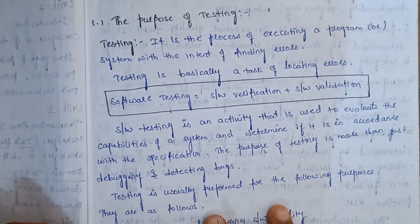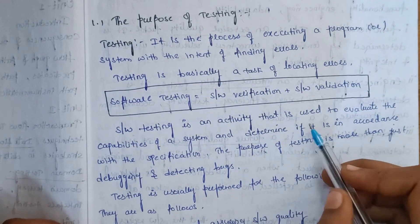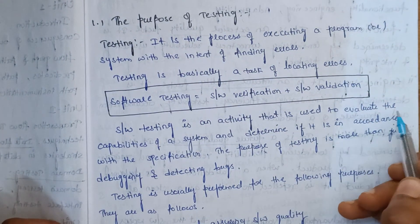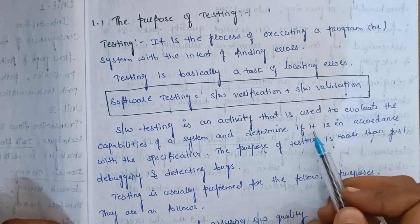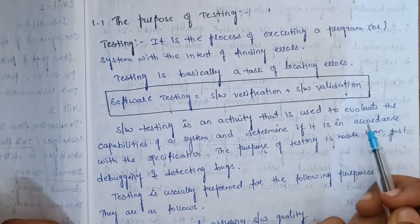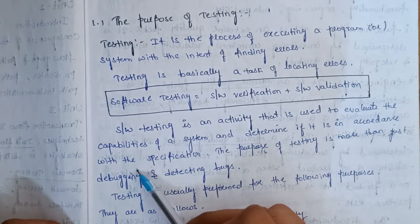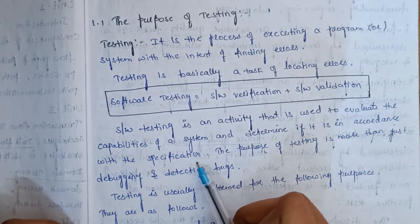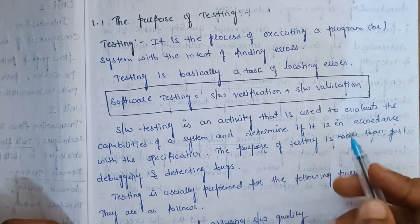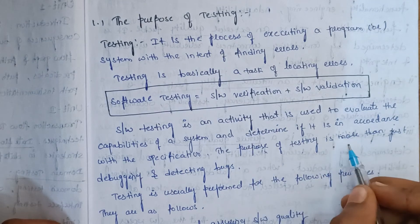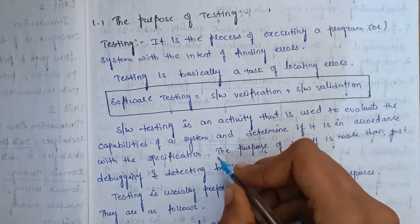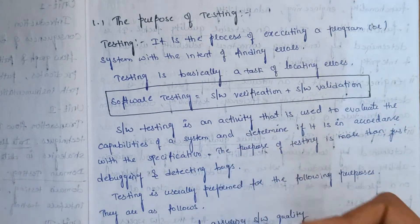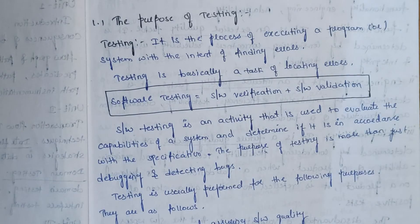Software testing is an activity that is used to evaluate the capabilities of a system and determine if it is in accordance with the specification. The purpose of testing is more than just debugging and detection of bugs.